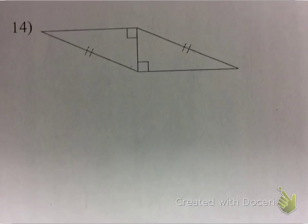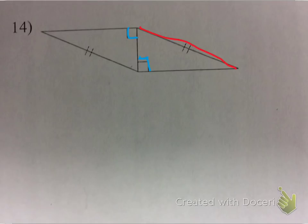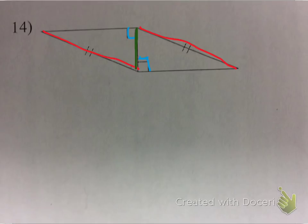The next one we want to look at is hypotenuse leg, which applies to right triangles. The first thing to notice is that both of these triangles have that 90-degree angle, so they are right triangles. I need to say that the hypotenuses are congruent — remember, the hypotenuse is the side across from the 90-degree angle — and I can say that right there. The last thing I need is to say that one of the legs is congruent, and they share that side. That is a leg for either one of them. So I've got right triangles, congruent hypotenuses, and a congruent leg. They are congruent by hypotenuse leg.